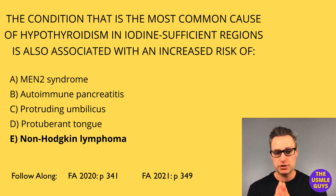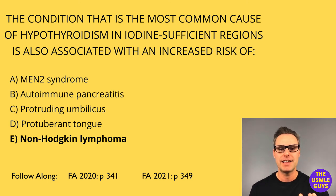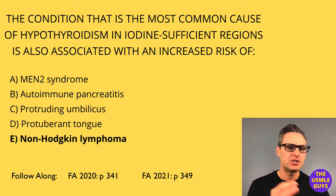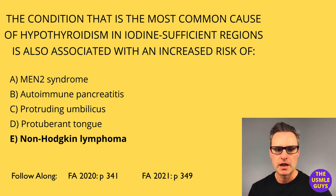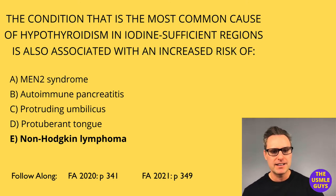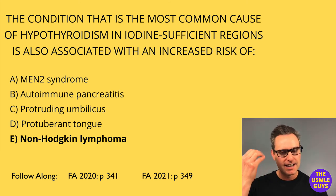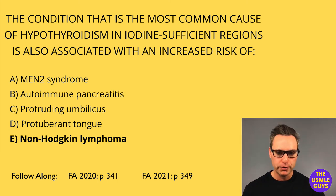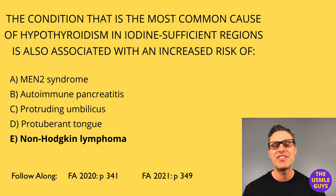Hashimoto thyroiditis is the most common cause of hypothyroidism in iodine-sufficient regions and is an autoimmune-mediated condition whereby there are antithyroid peroxidase and antithyroglobulin antibodies. The HLA haplotypes associated with this condition are HLA-DR3 and HLA-DR5. Those with Hashimoto thyroiditis are at an increased risk of non-Hodgkin lymphoma. Histology includes the presence of Hürthle cells — larger than follicular cells and they stain pink.